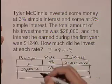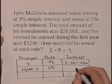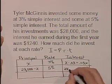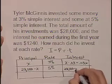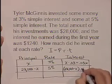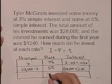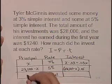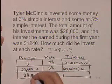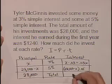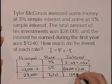We take the principal times the rate at 5%, 28,000 minus X times 0.05. And the total is going to be $28,000 and a total of $1,240 in interest.